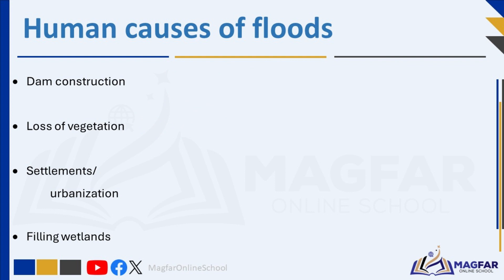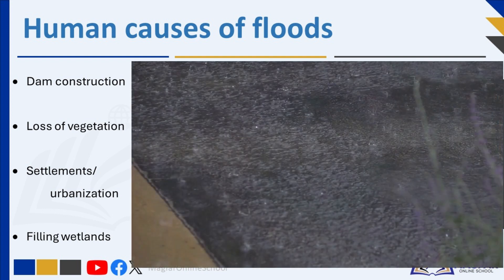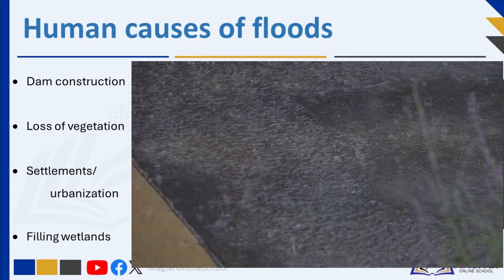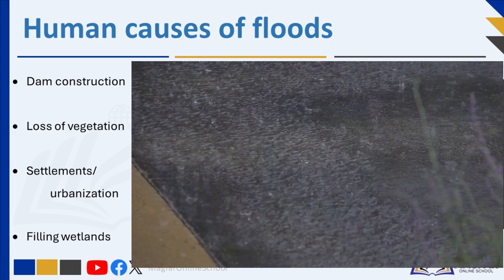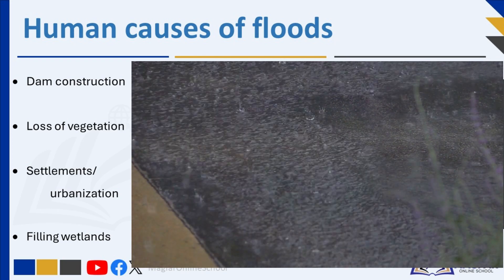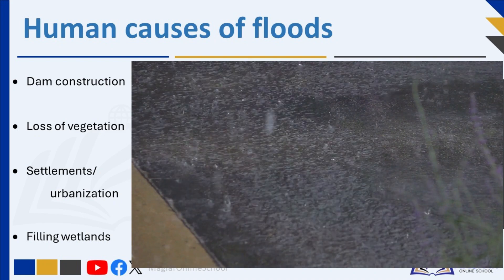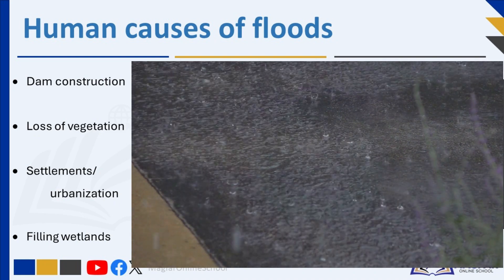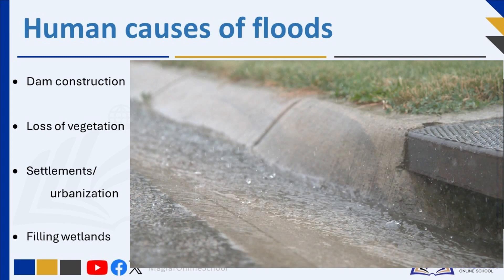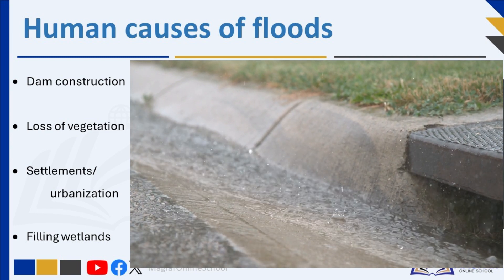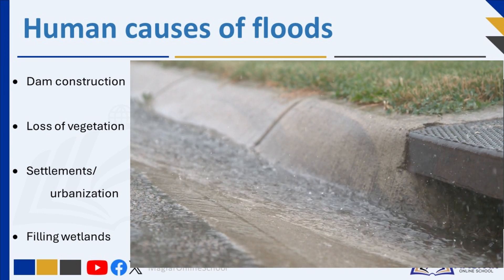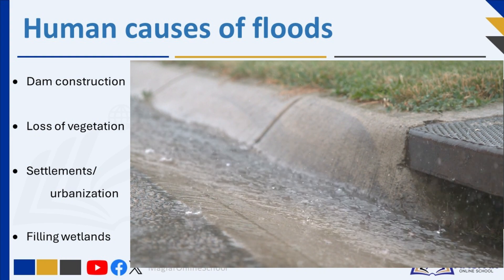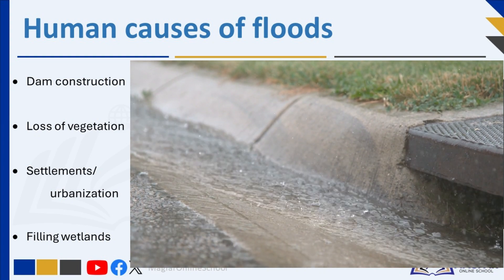Settlements: in cities and towns, much of the surface consists of concrete, tar, and roofing materials. Less water can soak into the soil, and water flows very quickly off streets and buildings into drains, increasing flood risk. In areas where there are trees and grass, most of the rainwater soaks into the ground and only a little goes into rivers.